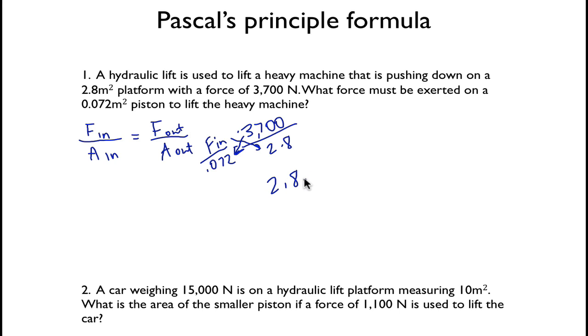So in this case, we get 2.8 times F in equals, and so whenever you multiply this, this is going on one side of the equal sign, and this is going on the opposite side of the equal sign. It doesn't matter which side really you put it on. And then we have 3,700 times 0.072. That's going to give us 266.4. It's going to be equal to 2.8 times our F in. So we still have this on that side. So now to do that, since we have multiplying in between here, we're going to divide both sides by 2.8 to move it to the other side.